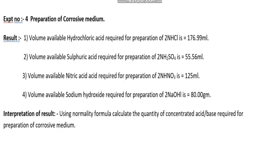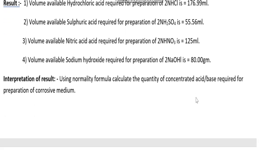Welcome students. This is the second part of practical related questions for the subject Basic Science Chemistry. Experiment number four is preparation of corrosive medium. Results: first, volume of available hydrochloric acid required for preparation of 2 Normal HCl is 176.99 ml. Second, volume of available sulfuric acid required for 2 Normal H2SO4 is 55.56 ml. Third, volume of available nitric acid required for 2 Normal HNO3 is 125 ml. Fourth, volume of available sodium hydroxide required for 2 Normal NaOH is 80 grams.